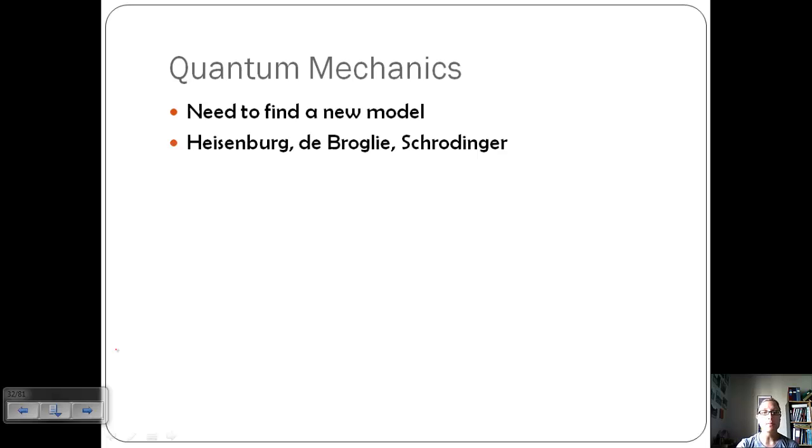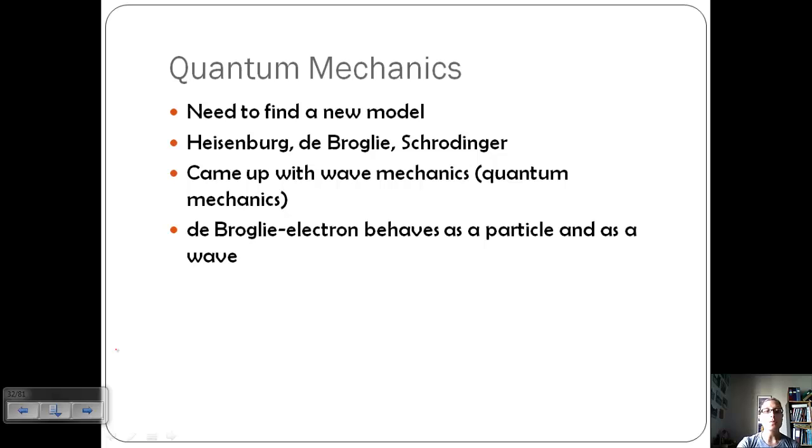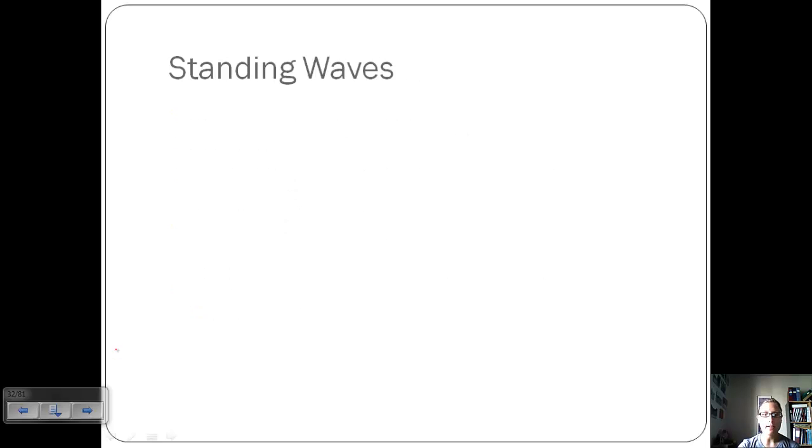Some scientists named Heisenberg, de Broglie, and Schrodinger worked on coming up with this new model of the atom and they came up with what's called wave mechanics or quantum mechanics. Remember from physics, quantum means really small particles like electrons and even potentially atoms. De Broglie said that an electron behaves as a particle and as a wave. Schrodinger added to that saying that an electron bound to the nucleus is like a standing wave. We took these two things and came up with a new quantum mechanical model.